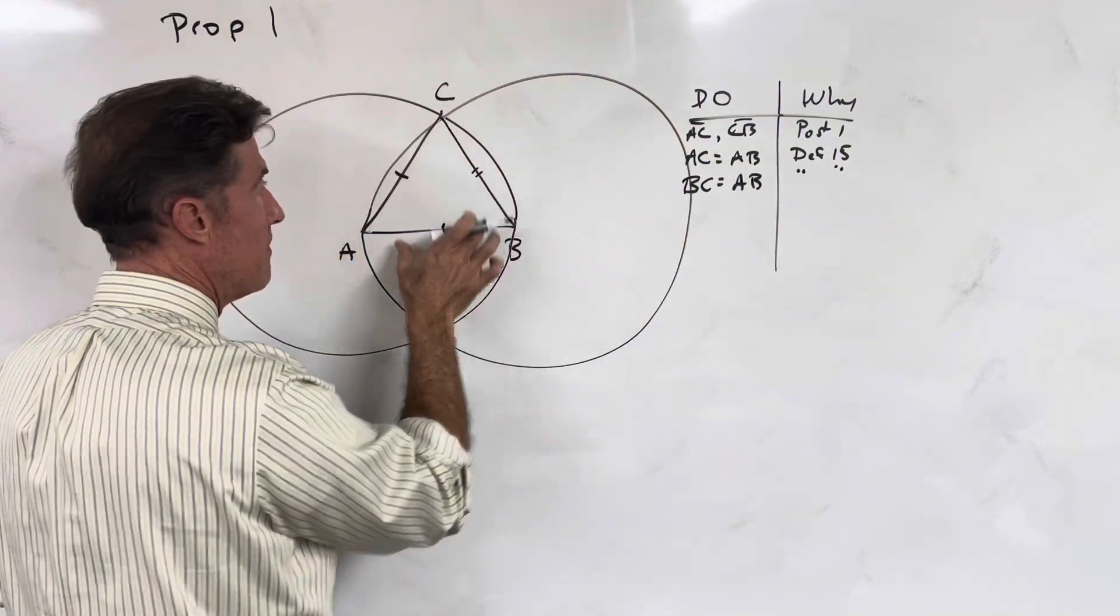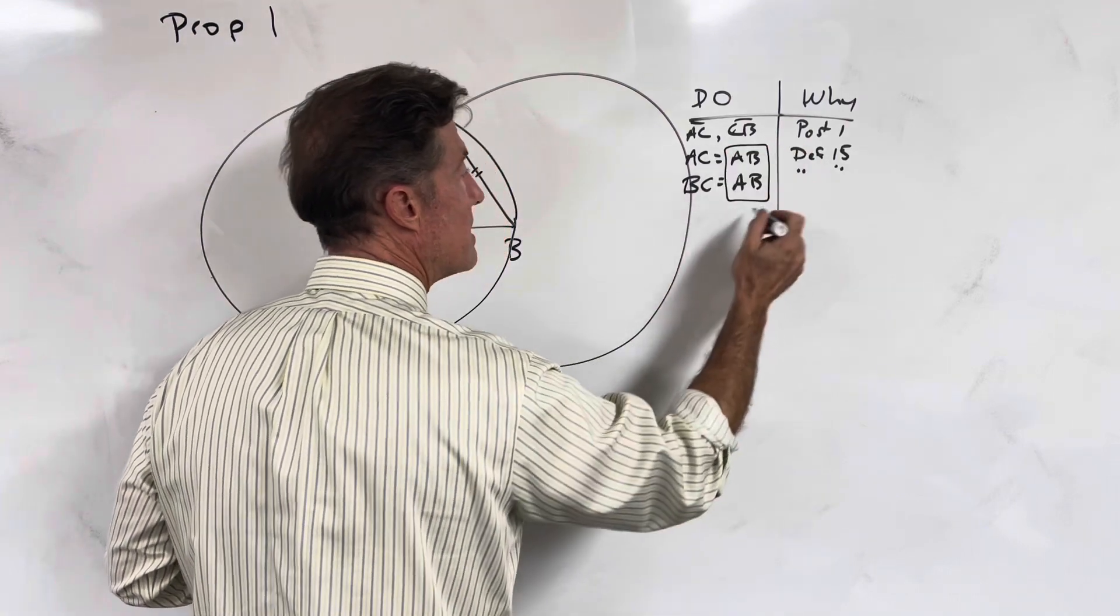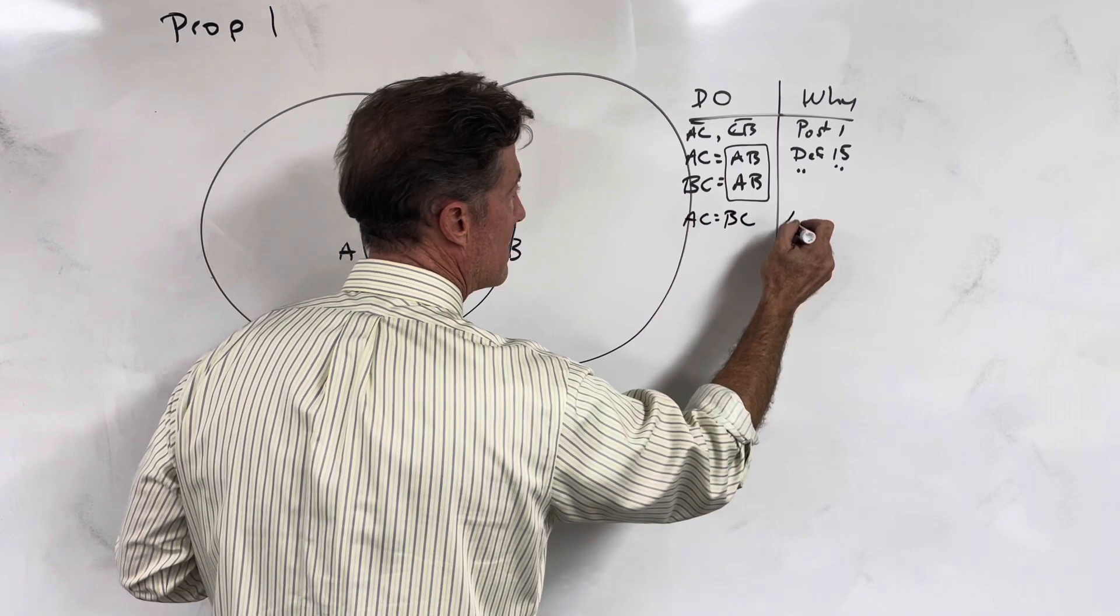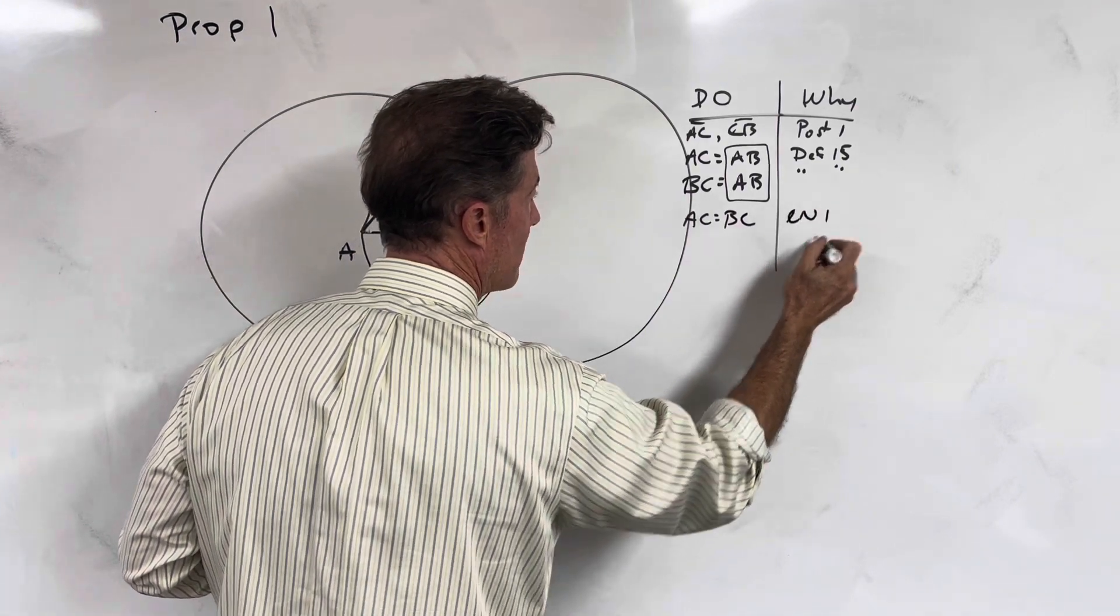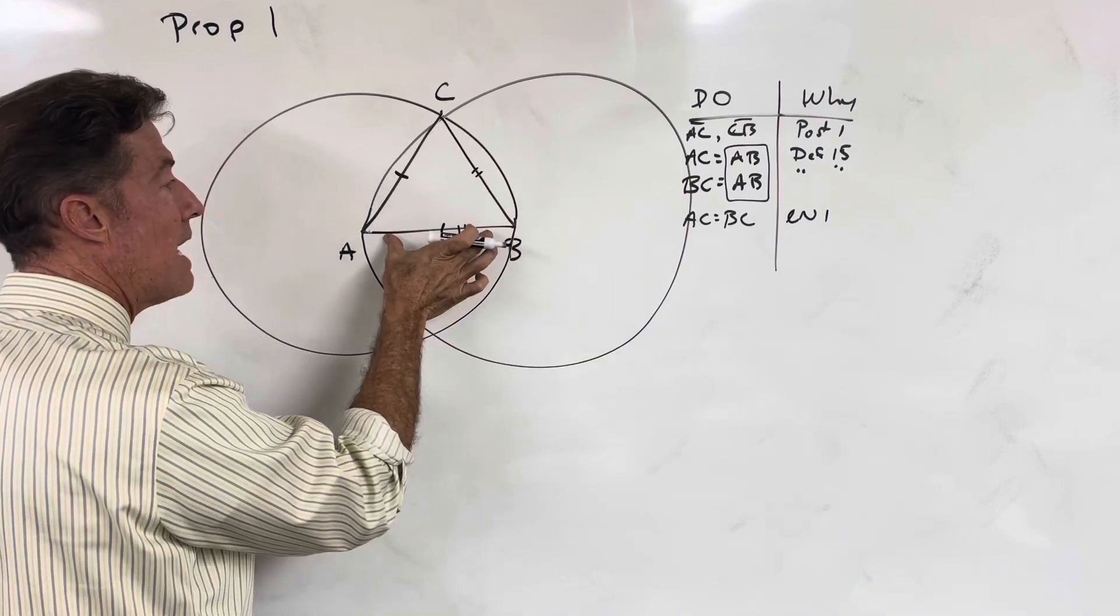Now notice, AC is equal to AB, and BC is equal to AB, and two things that are equal to the same thing are therefore equal to each other. This is common notion 1. Therefore, AC is equal to BC, and both are equal to AB.